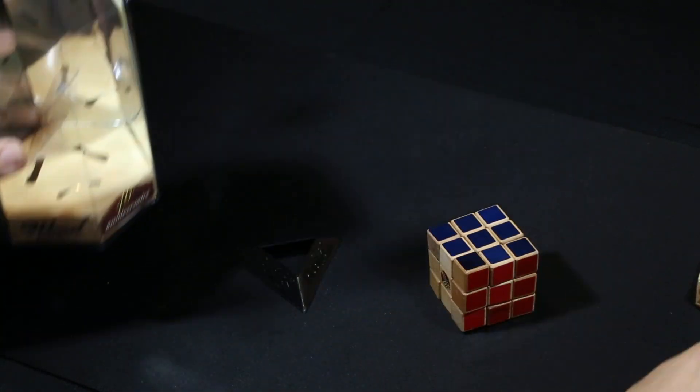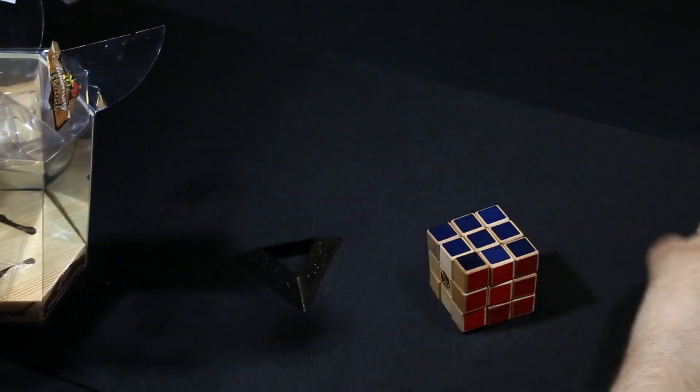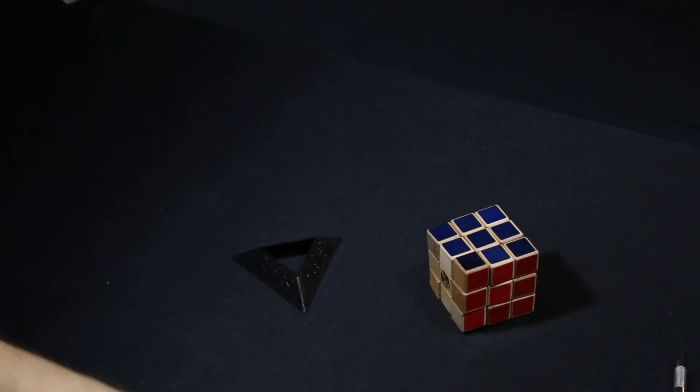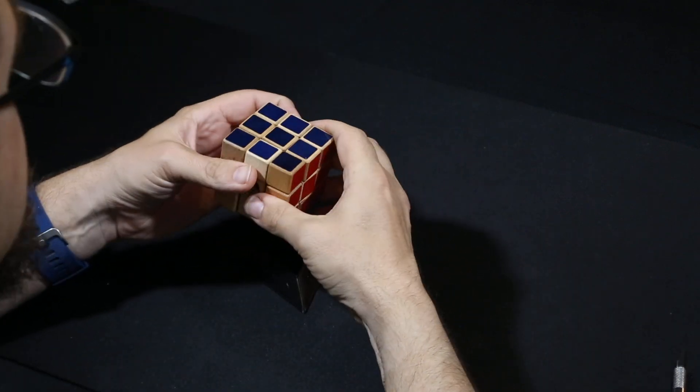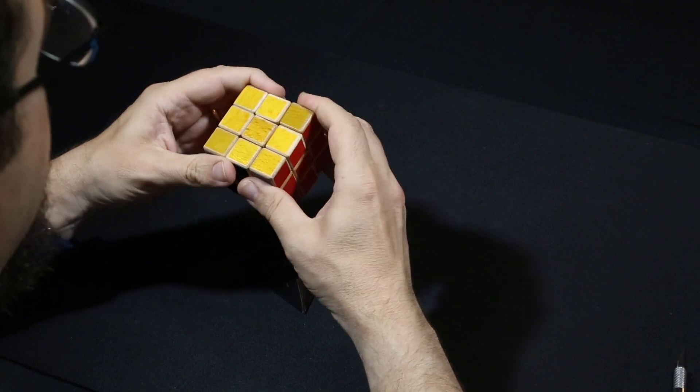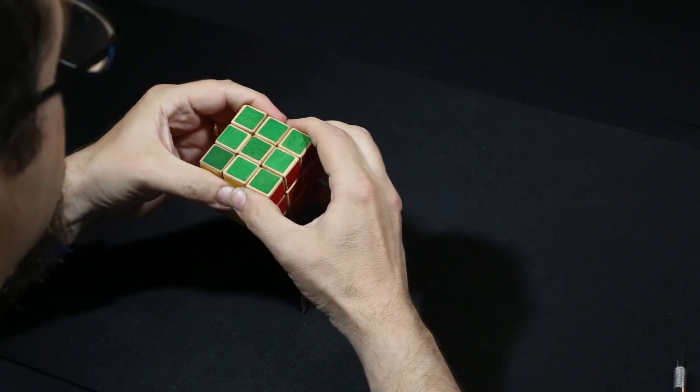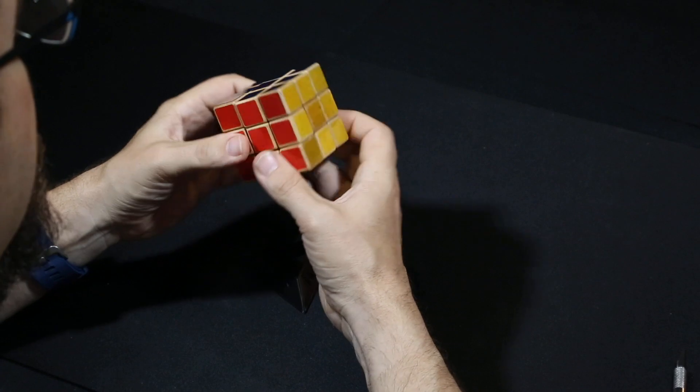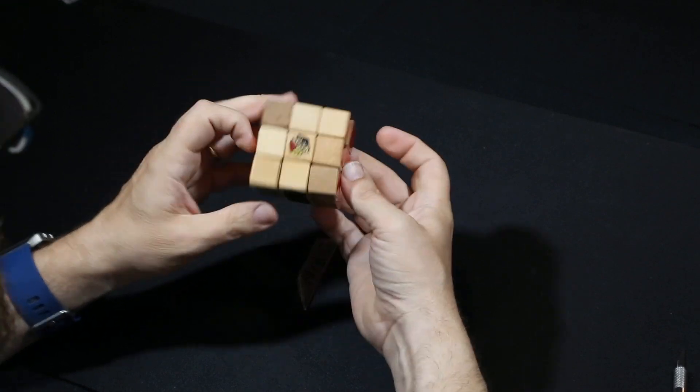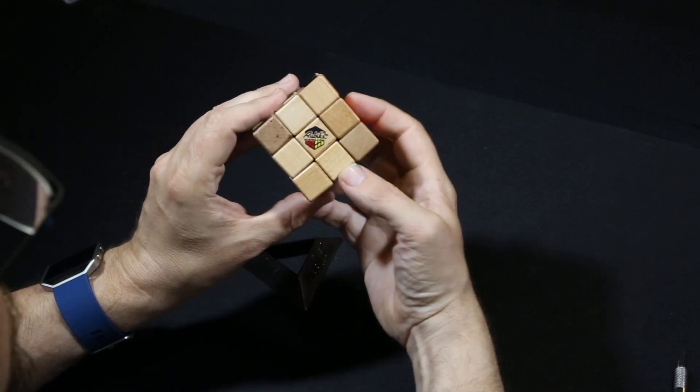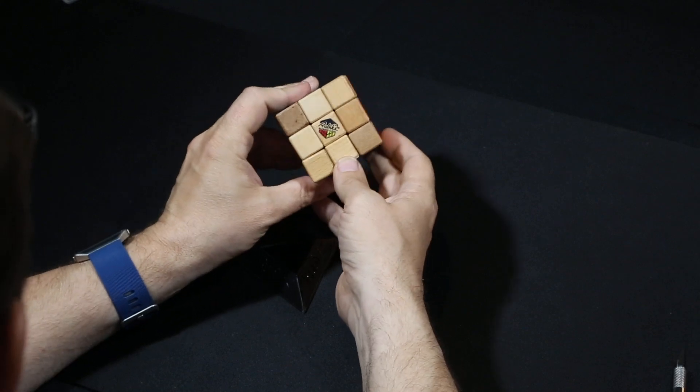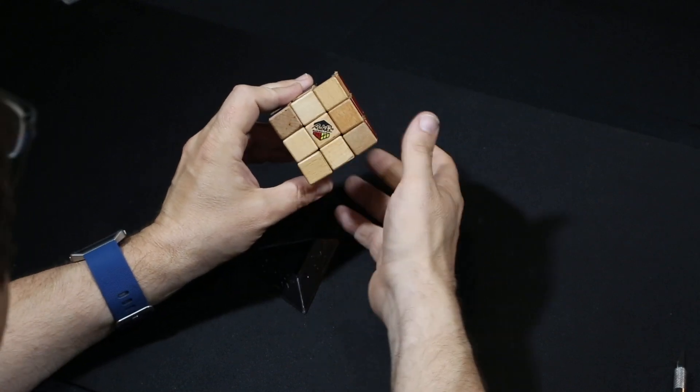All right so yeah it's kind of weird. Okay so we have one cube right here. This is the cube. Oh it's heavy. Wow. That's kind of cool though. It's like made of wood. Like totally. So here we go. It's even got the Rubik's logo on it here right here. So that's pretty cool.